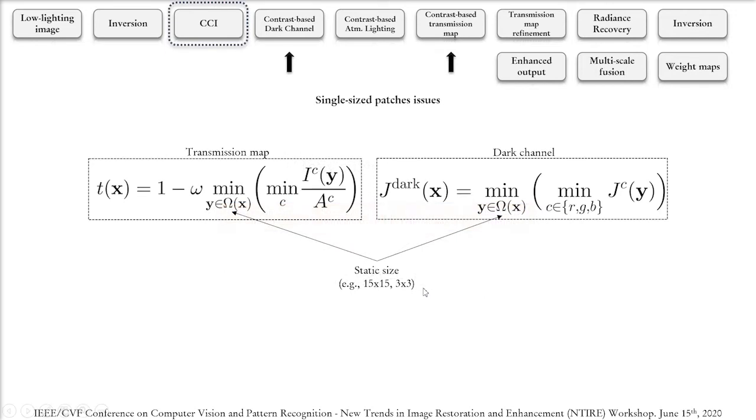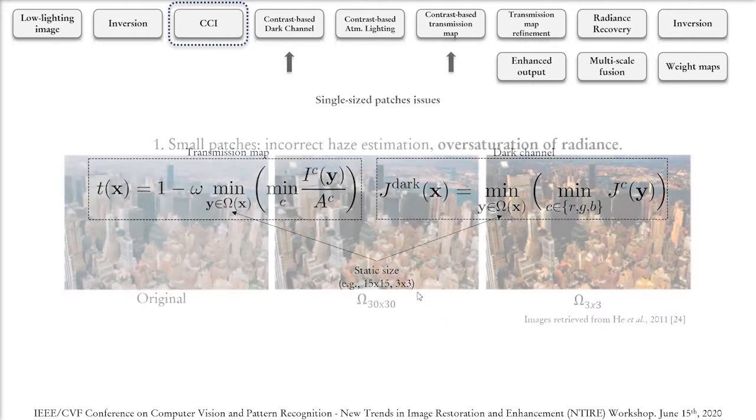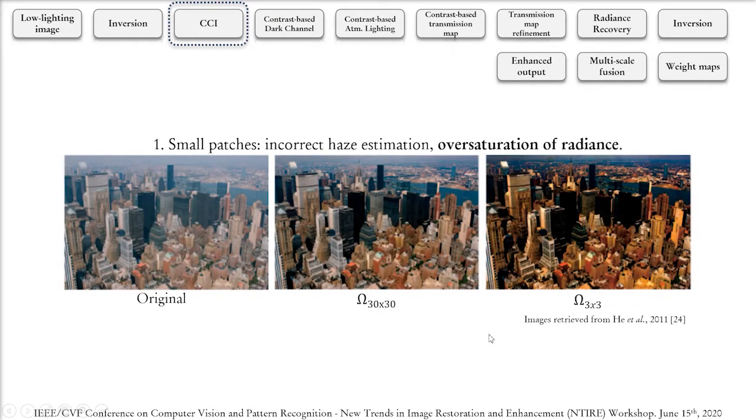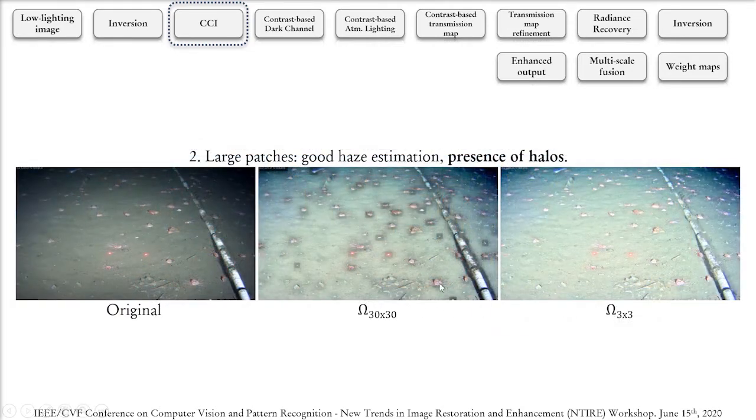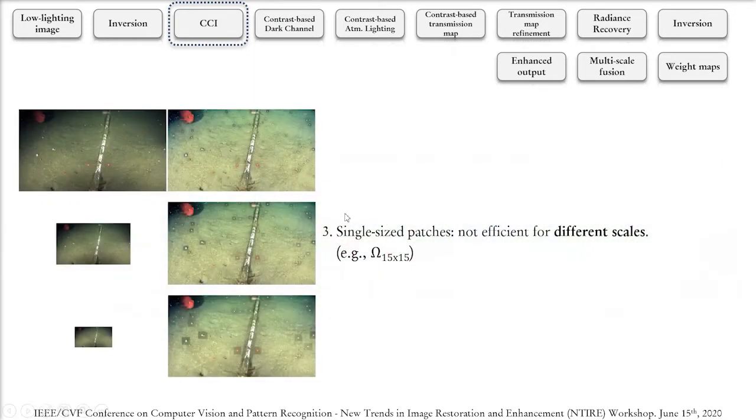In traditional single-image dehazing mechanisms, the dark channel and the transmission map are calculated considering a patch omega of a single static size that creates problems. If we choose small patch sizes, there is an oversaturation of radiance in the output, problems related to the presence of halos when larger patch sizes are chosen, especially around intensity discontinuities, and also the fact that a single patch size does not work well with the same image in different scales.